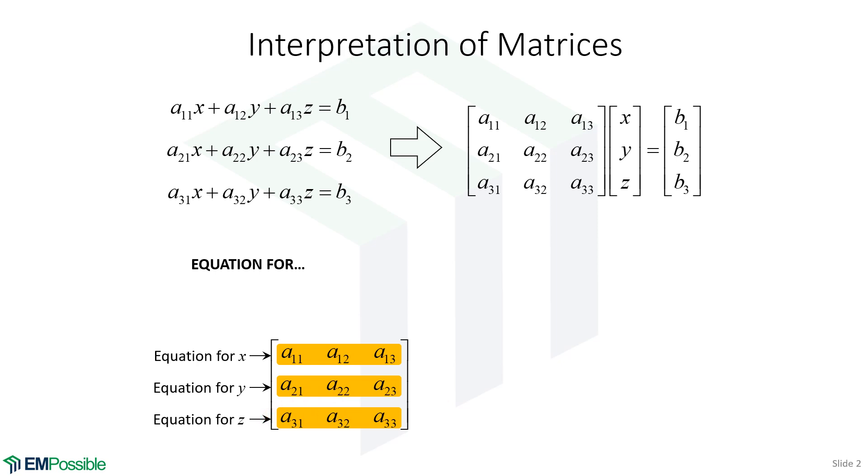A mathematician who's a stickler for details would say that first equation has nothing more to do with X than it does Y and Z. And that is absolutely correct. But it's going to be very useful for us to think this way, because each row in the matrix will come from a finite difference equation that we write for one specific point in the grid.